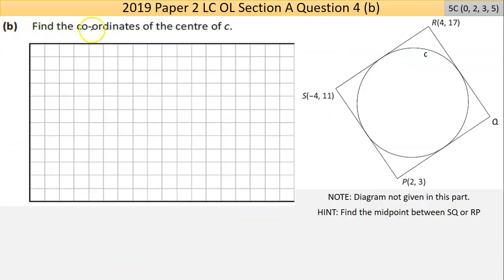So part B here says find the coordinates of the center of C. If you think about it, the center C is somewhere in here. If you think about it, the diagonal... I could get this and this point and get the midpoint of them. And I'll do it. Or use R and P and get the midpoint.